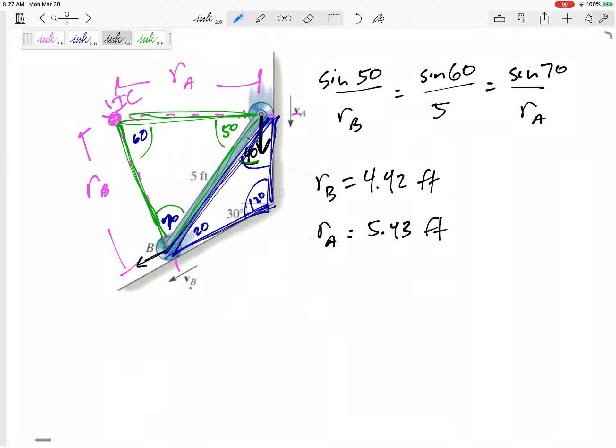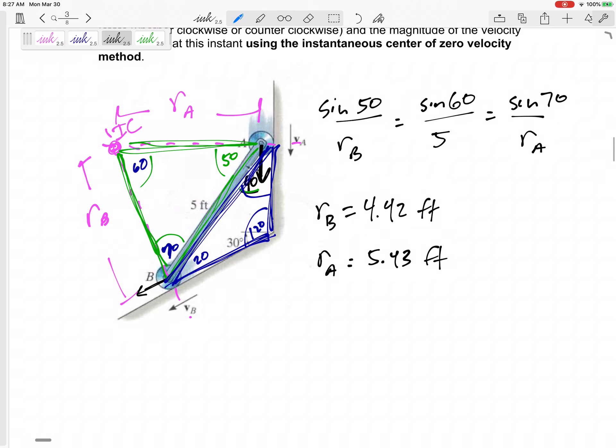Alright. And now, what is the only equation we use for... After you find the R's, what is the only equation we're using for these instantaneous center problems? V equals R omega. V equals R omega. V equals R omega.